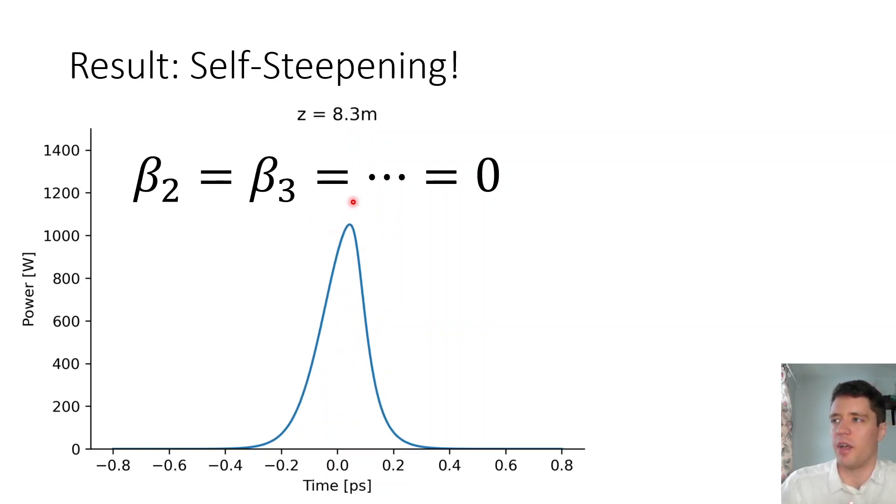So you may have noticed that after a certain distance around, I think it's like 12 meters, we get this strange spiking behavior here of the pulse. Now, you may be wondering if that is a real physical phenomenon or if it's just a numerical artifact. And it turns out that this is actually just a numerical artifact of the simulation.